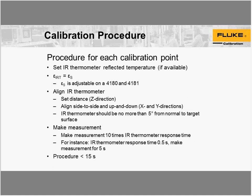At the point you're ready to make the measurement, you should make the measurement for 10 times the IR thermometer response time. For example, both the 4180 and 4181 have a response time of 0.5 seconds. If you use an IR thermometer with a response time of 0.5 seconds, make the measurement for 5 seconds — in other words, 10 times that response time.